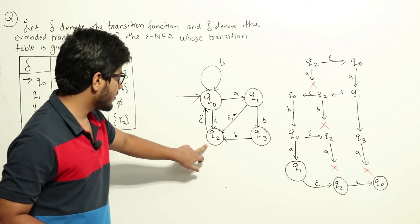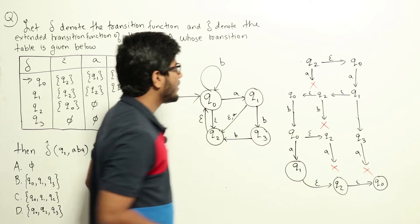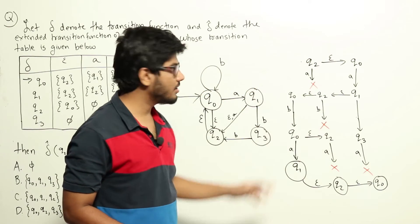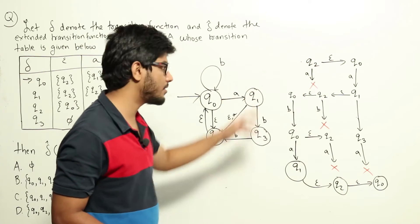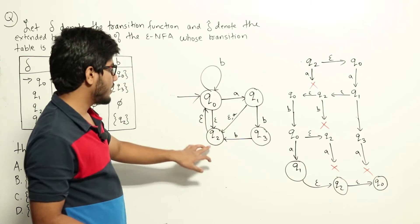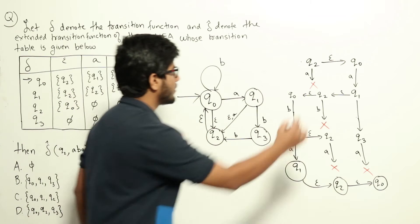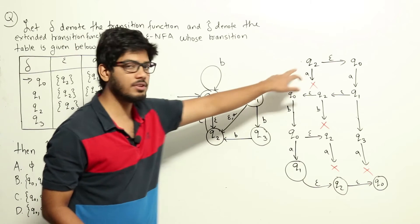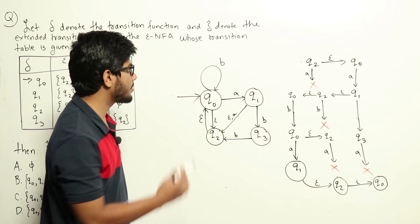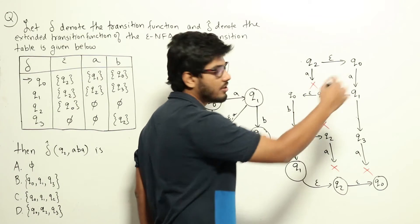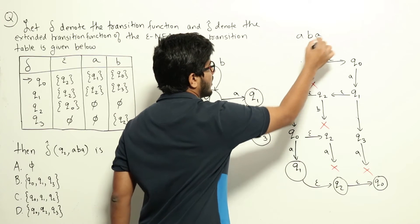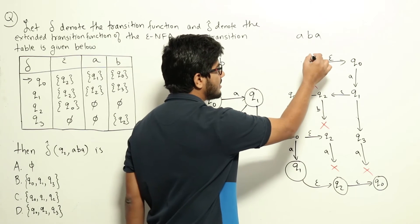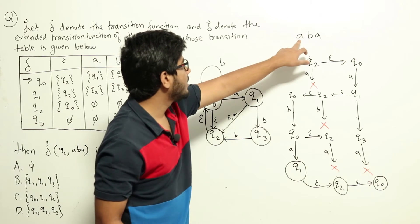Currently we are in state q2. We need to find delta-cap, the extended transition function. First, we take all epsilon transitions from q2: on epsilon from q2 we can go to q0. From q0 on epsilon we can go to q2, but q2 is already included. So before reading any input, starting at q2, we can simultaneously be in states q2 and q0. Now we read the first character a.